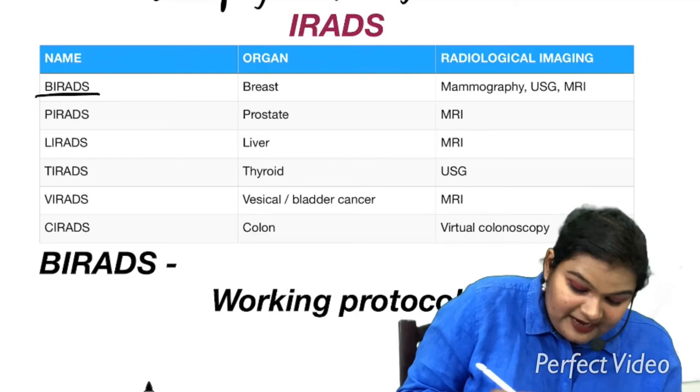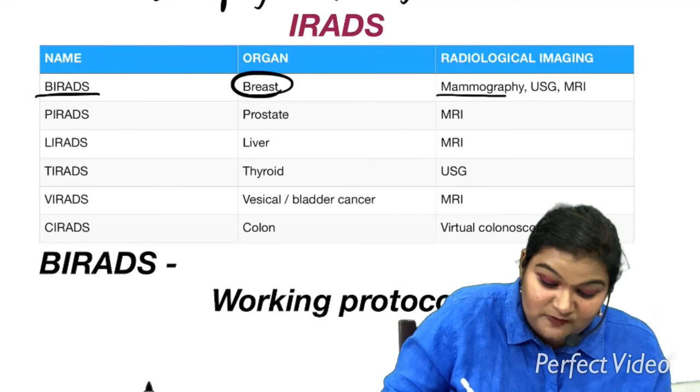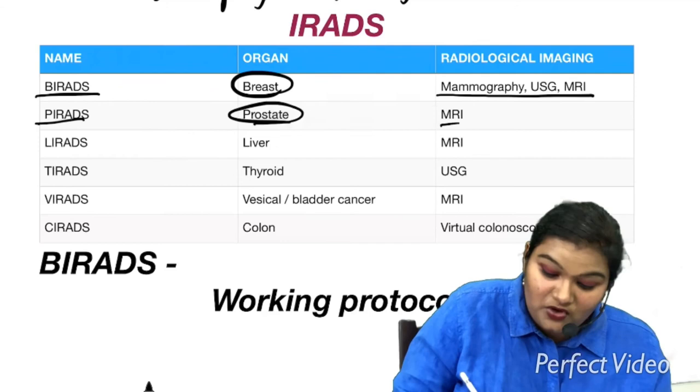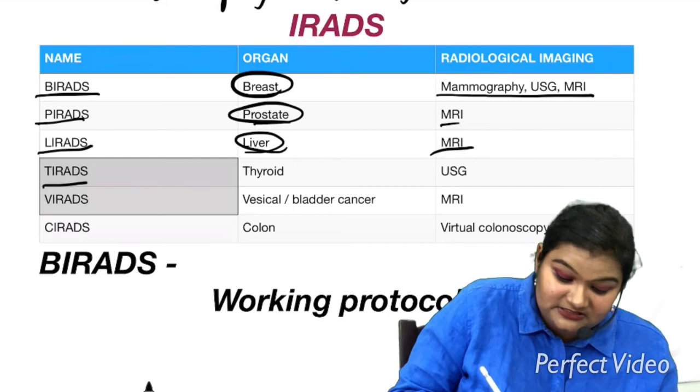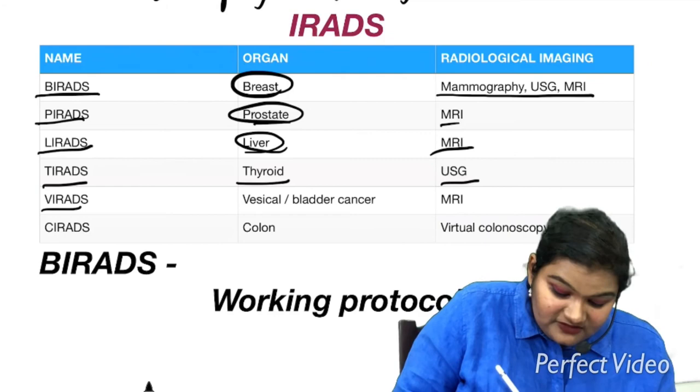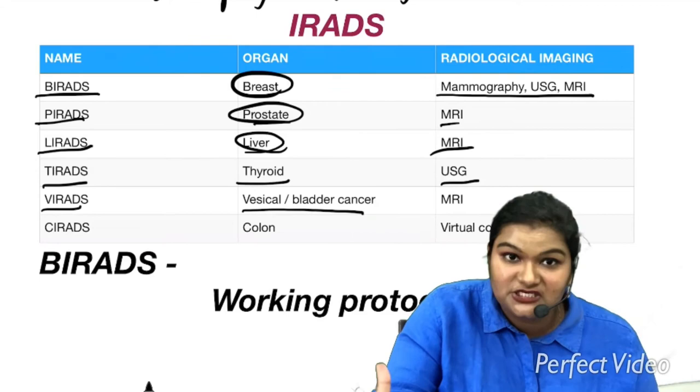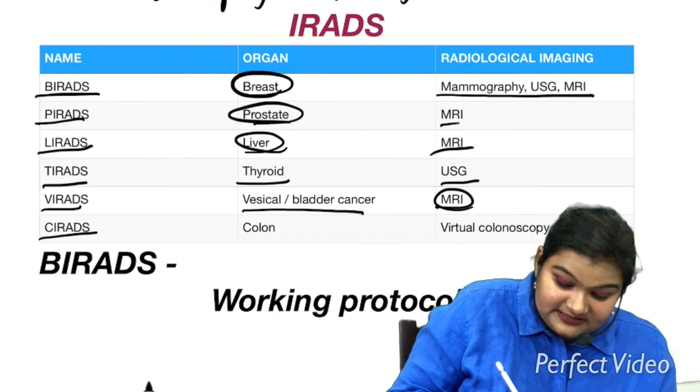The first one is BIRADS. BIRADS means the organ of investigation is breast and the radiological techniques we are going to use is mammography, USG and MRI. PIRADS, the organ of investigation is prostate and we are going to use radiological imaging as MRI. Then LIRADS, here the organ of investigation is liver and you are going to do MRI. In case of TIRADS, the organ is thyroid and you are going to do USG. Then we are left with VIRADS, vesicle or bladder cancer. The organ of investigation will be the urinary bladder and you are going to do MRI. And the last one is CIRADS, in which the organ of investigation is colon and you are going to do virtual colonoscopy.